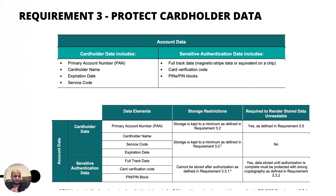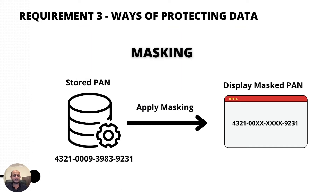If you're storing the PAN, you have to encrypt it, or if you're showing it you have to take other steps. There are many ways of protecting data when storing, showing, or printing it, so I'll go through them one by one. The first method is masking. Masking applies when you're displaying data on screens, receipts, or printouts — not to be confused with storage requirements.